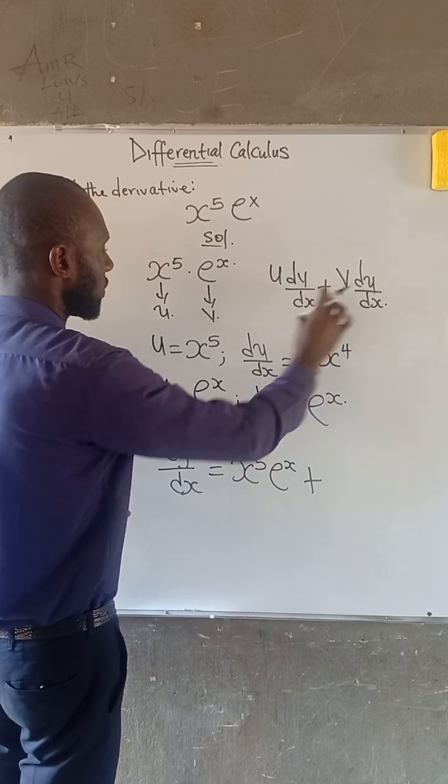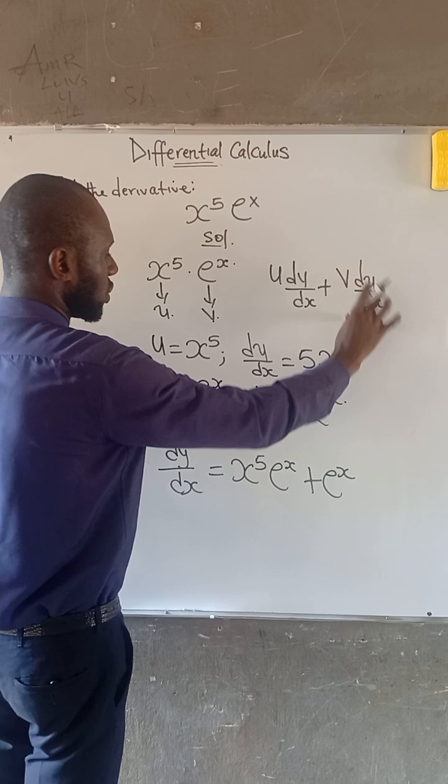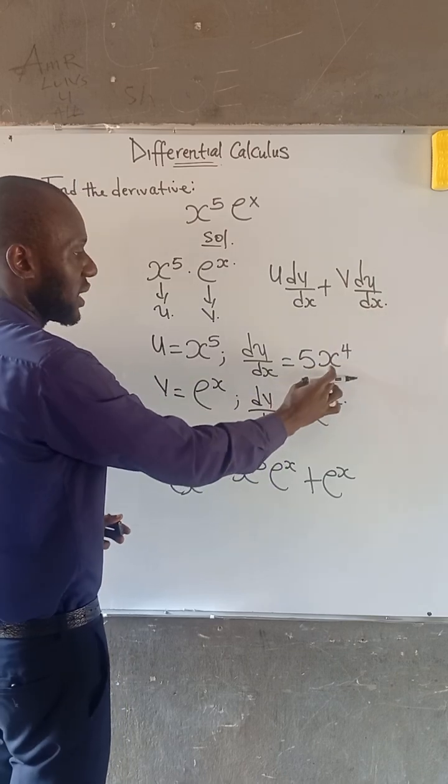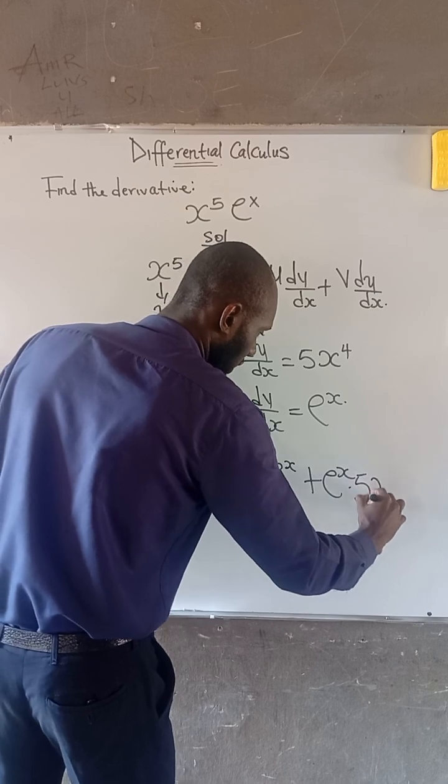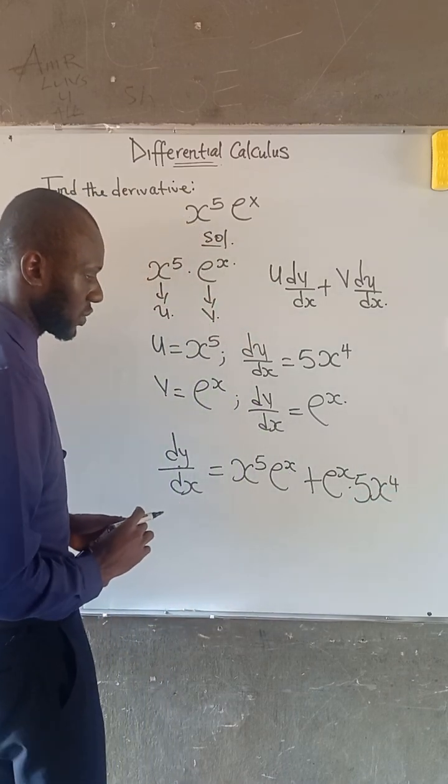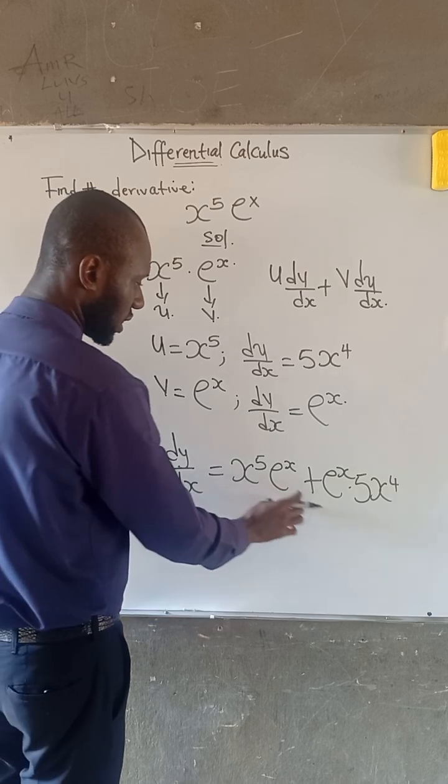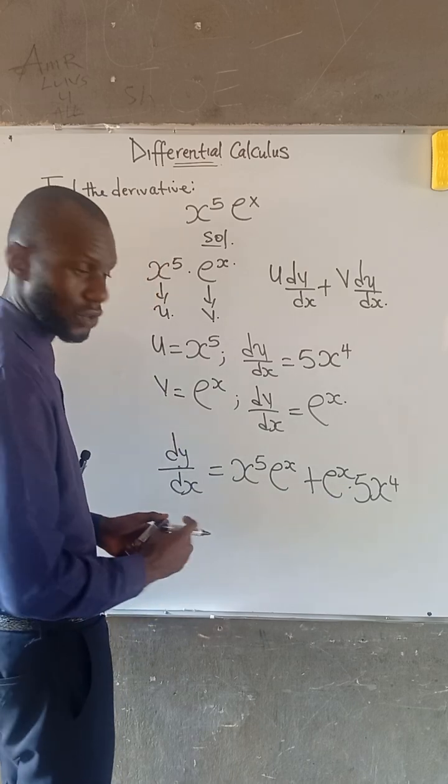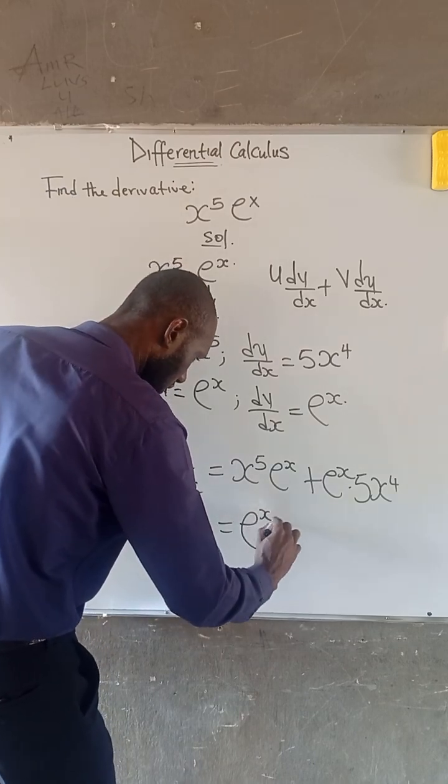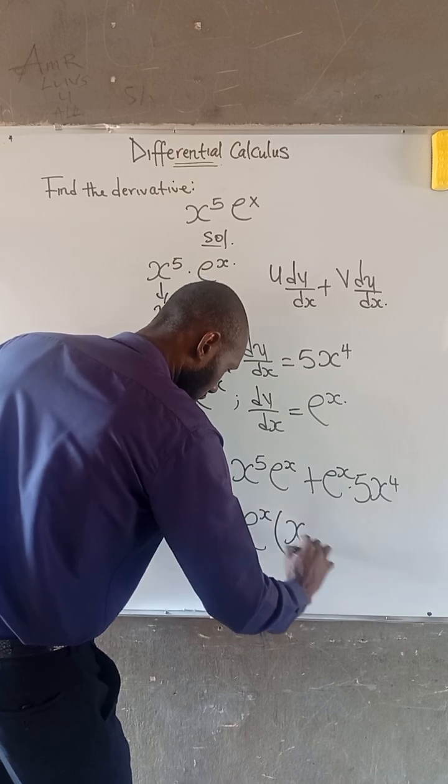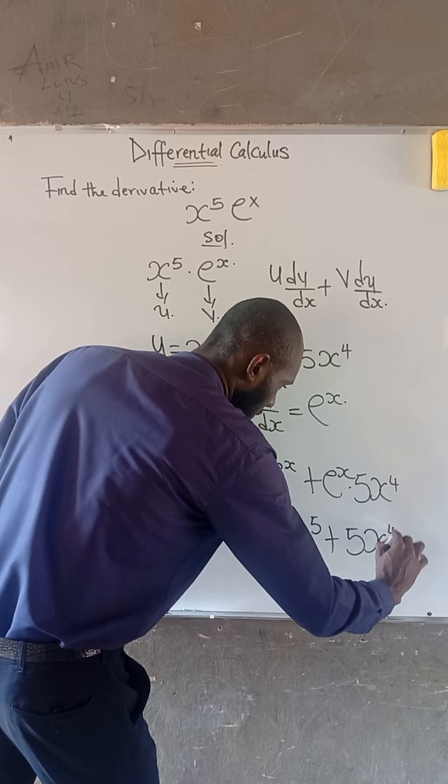v, which is giving us e to the power of x, and du over dx, which is 5 multiplied by x to the power of 4. Looking at this equation, we can find that e is common. So we can factor out e to the power of x. This is written as e to the power of x multiplied by x to the power of 5 plus 5 multiplied by x to the power of 4.